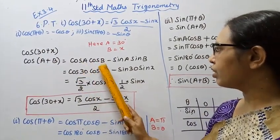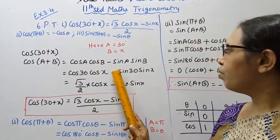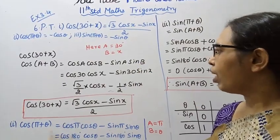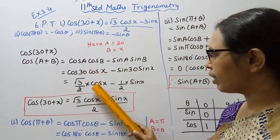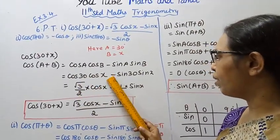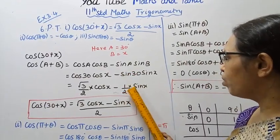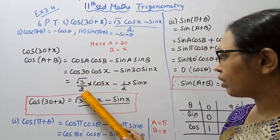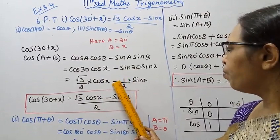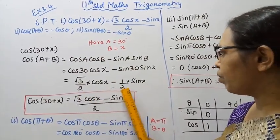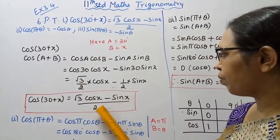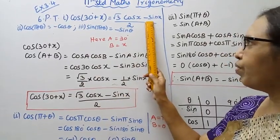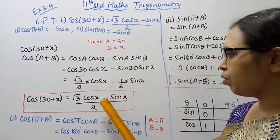Then cos(30 + x) = cos 30 cos x - sin 30 sin x = (√3/2) cos x - (1/2) sin x = (√3 cos x - sin x) / 2. First subdivision proved.